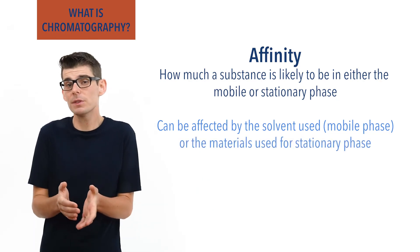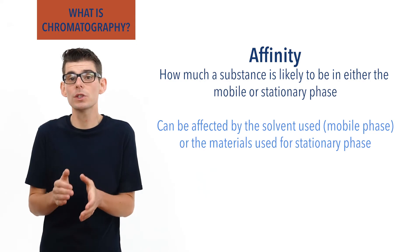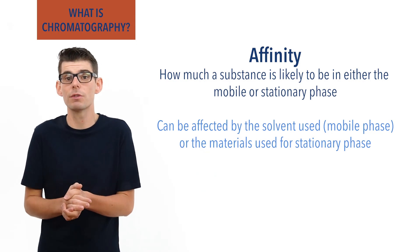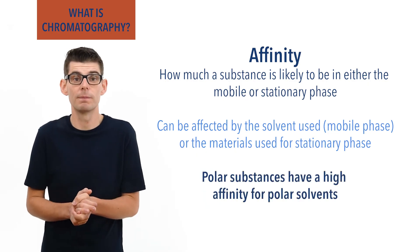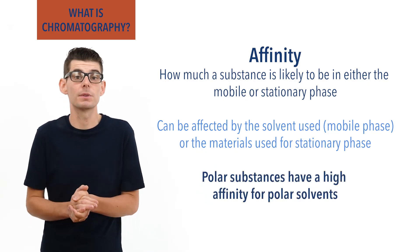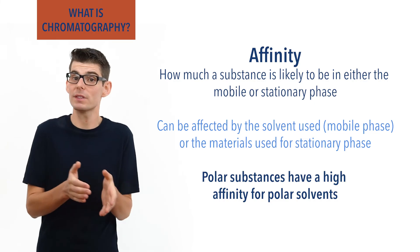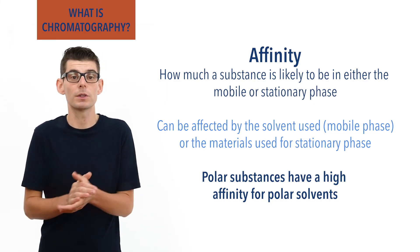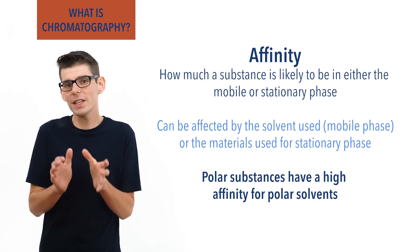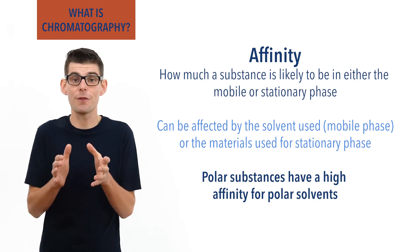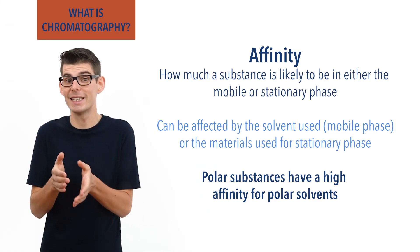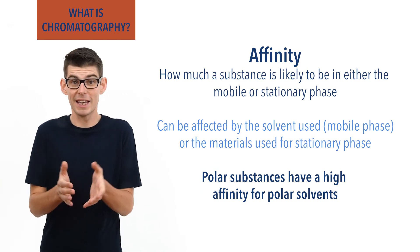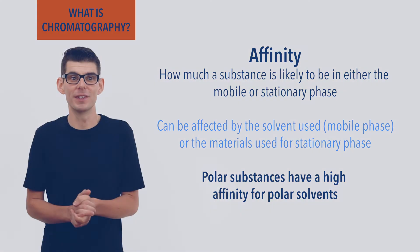If a substance is polar, for example, then it will spend more time in a polar solvent — the mobile phase — compared to the stationary phase during chromatography. Whereas a non-polar substance would spend more time in the stationary phase as it would have a lower affinity to a polar solvent. Slight differences in polarity affect the amount of time spent in each phase, meaning only small differences between molecules can allow them to be separated using chromatography.